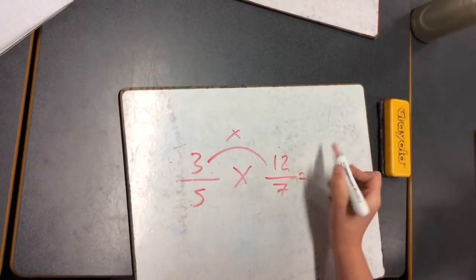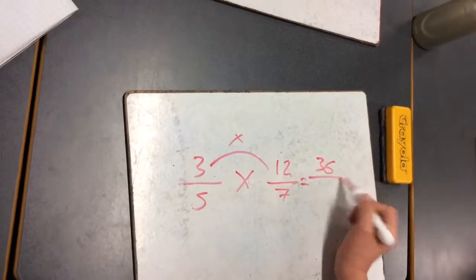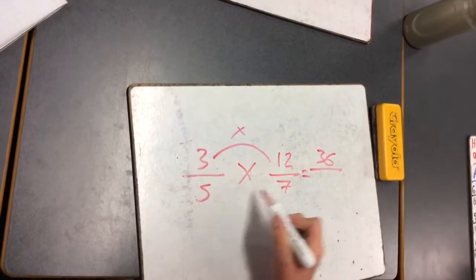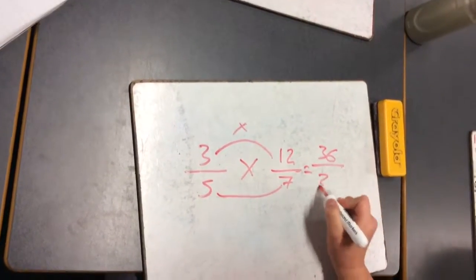3 times 12, which is 36, which is our new numerator. 5 times 7, which is 35.